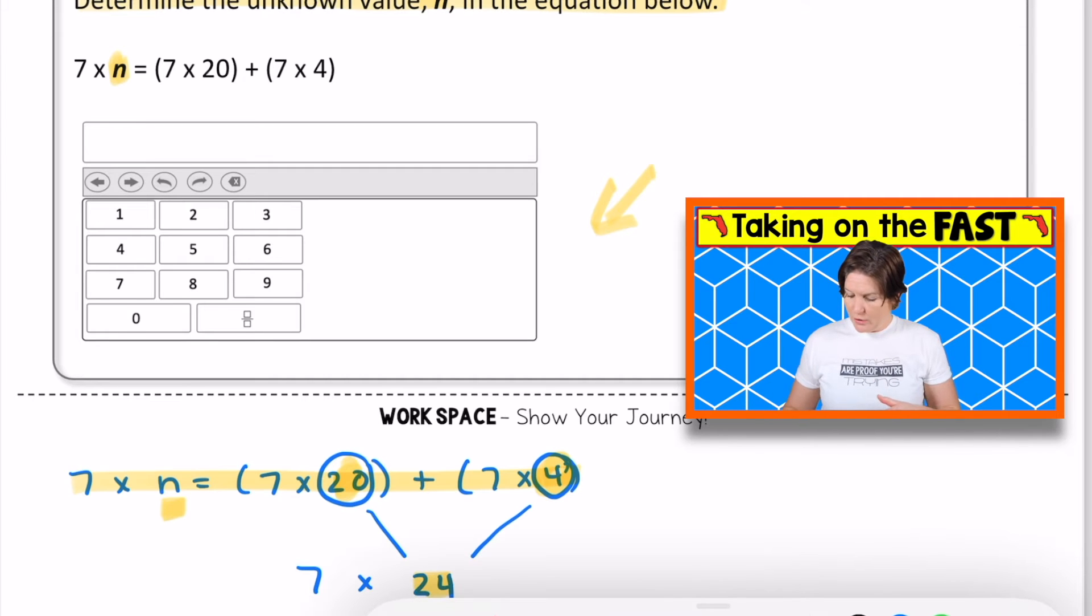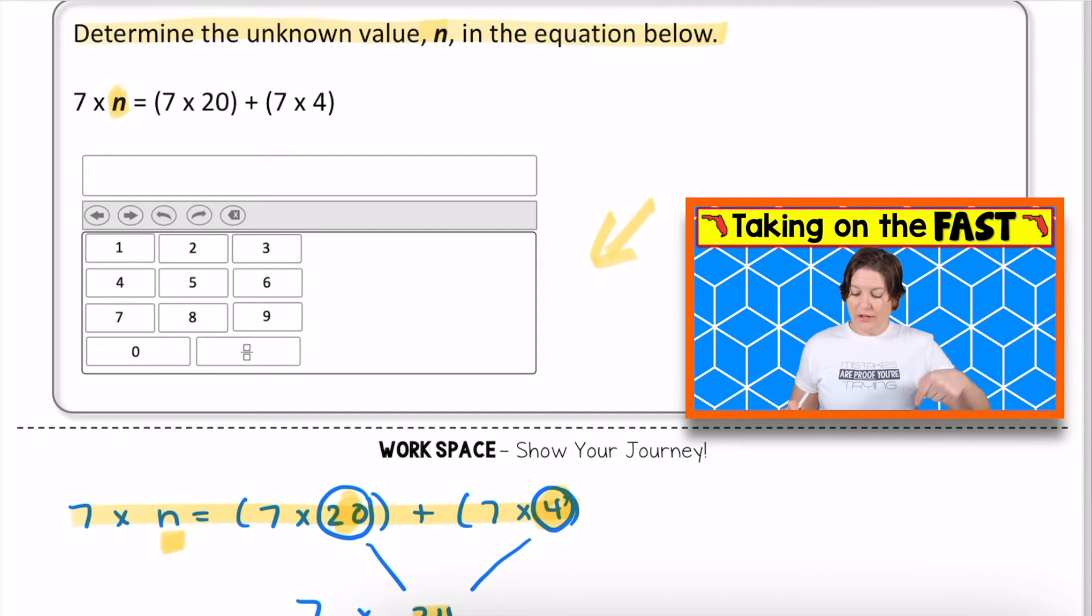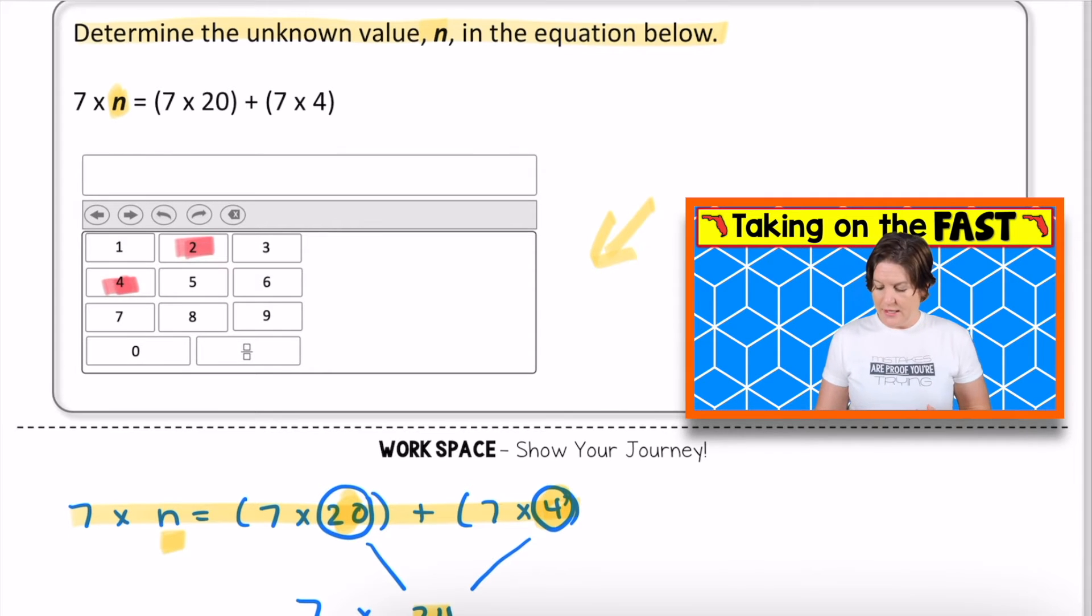So let me make sure. The question says determine the unknown value of n in the equation. The unknown value would be 24. And what I would do is tap two and tap four using my equation editor tool on my computer-based test, and that would input the answer right there. Pause the video to jot down your notes and press play when you're ready to continue.